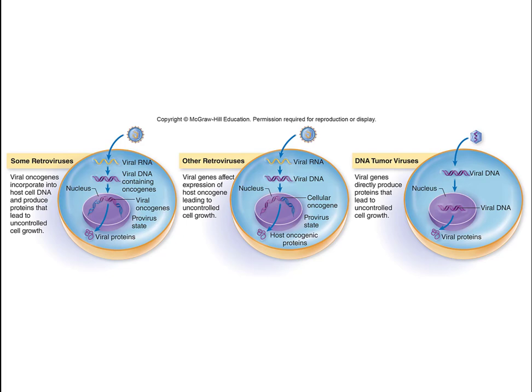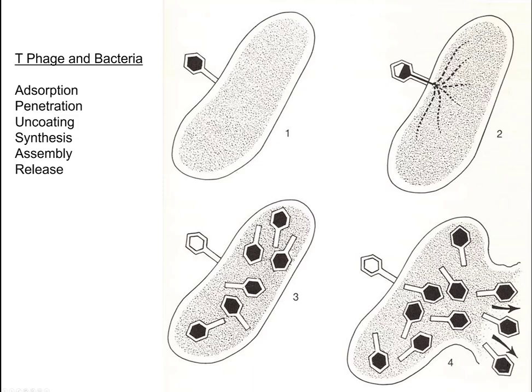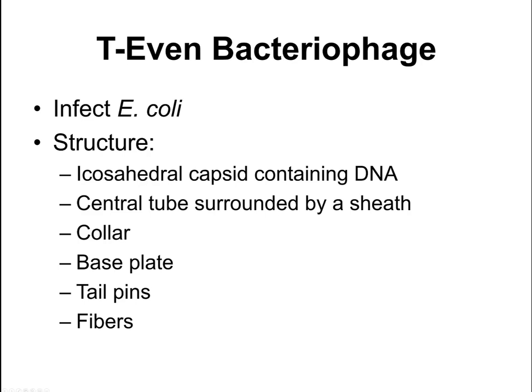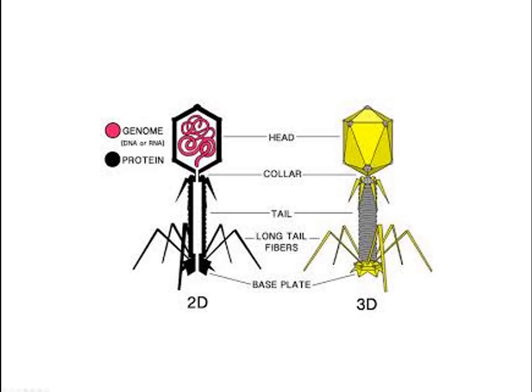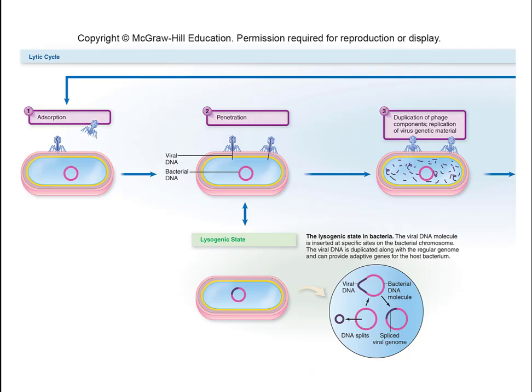The bacteriophage, meaning bacteria-eating, works on the same principles. We use bacteriophages to understand what was going on with human or mammalian viruses. T-even bacteriophages — T2, T4 — only infect E. coli and all have similar structures. They incorporate their DNA by scrunching like an injection needle. That's all I'm going to cover on the exam. I appreciate your time, and I'll catch you in Chapter 6 this week.